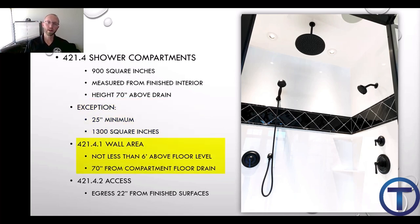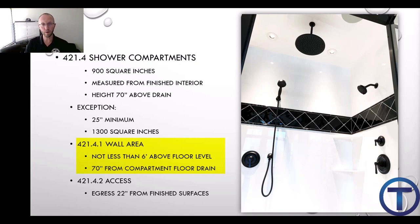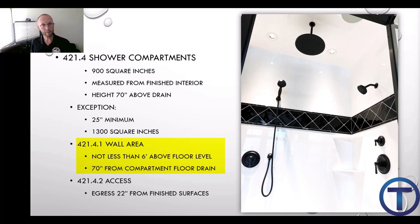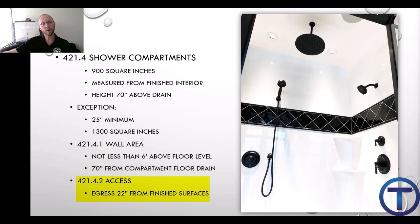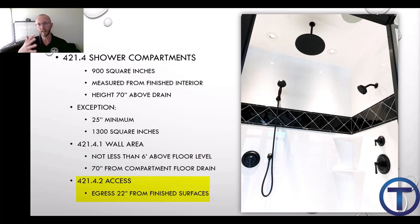For 4.21.4.1, wall surfaces have to be not less than six feet — 72 inches — above the floor level, and 70 inches from the compartment floor drain. So stepping from the bathroom floor into the shower, you'd need wall surfaces at least 70 inches up from the drain and at least 72 inches from the bathroom floor. 4.21.4.2 talks about access — egress, the opening to get into the shower, has to be at least 22 inches, providing enough space to maneuver in and out.